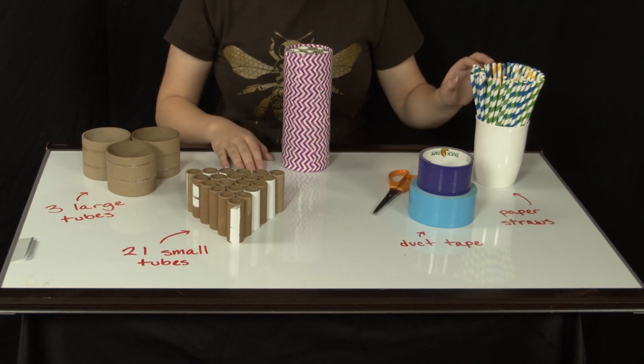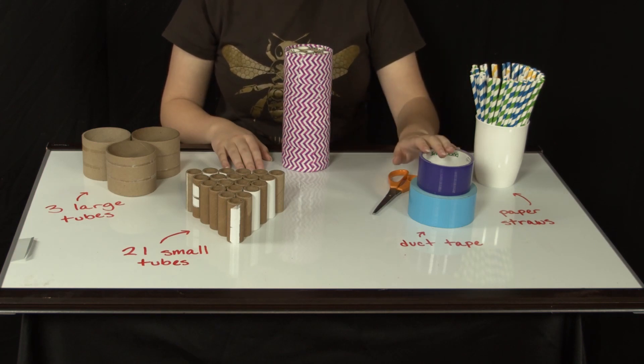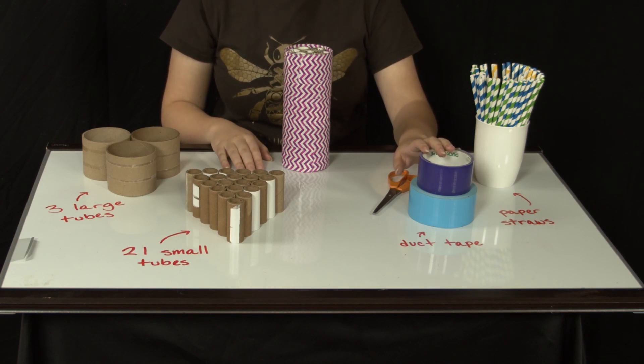I'll also be using roughly 60 paper straws, which will act like how holes bored into a tree would in the wild, and roughly 7 or 8 feet of colorful duct tape. I am using blue and purple, which are among the most attractive colors for bees, but any colors work great.